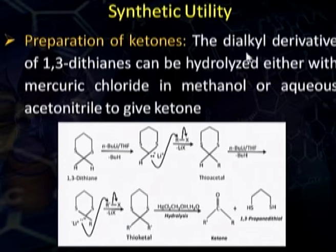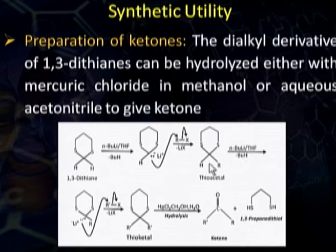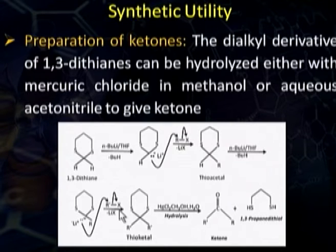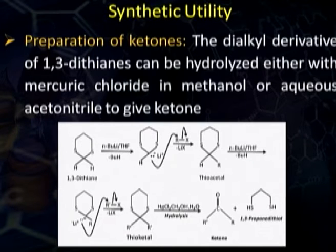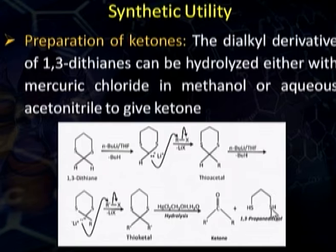Ketones are prepared when dialkyl derivatives are hydrolyzed. Starting from 1,3-dithiane, it is converted into the monoalkyl derivative as before. From the monoalkyl derivative, n-butyllithium removes the remaining hydrogen and generates a carbanion, which upon treatment with a second alkyl halide undergoes nucleophilic substitution to give the dialkyl product of 1,3-dithiane, also known as a thioketal. This thioketal upon hydrolysis with mercuric chloride in methanol or aqueous acetonitrile produces one molecule of ketone and one molecule of propanedithiol.